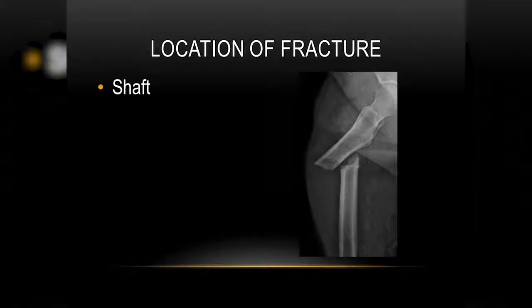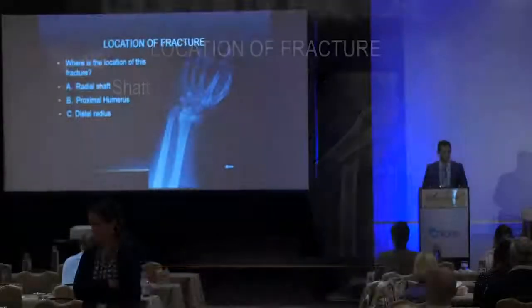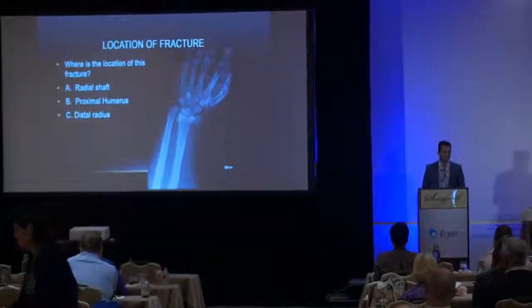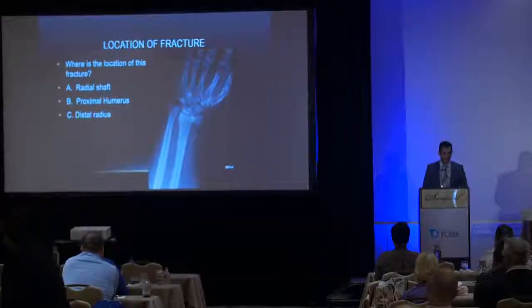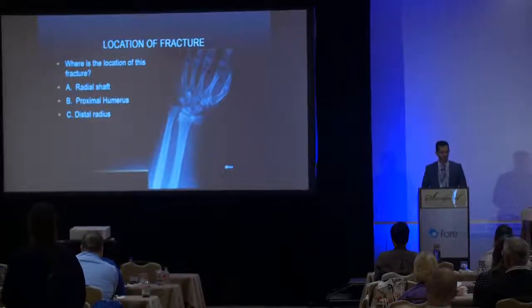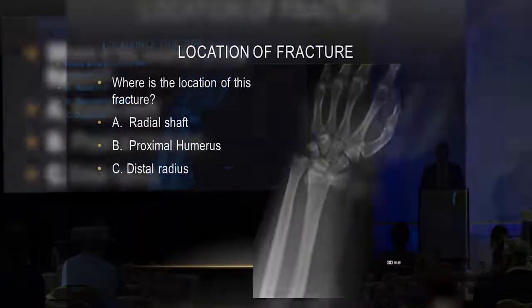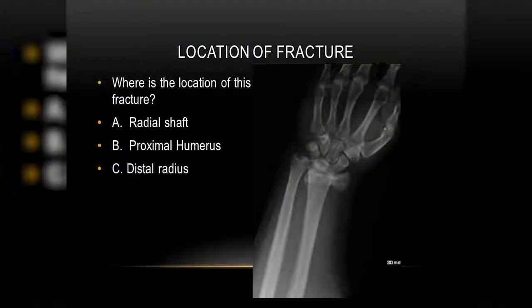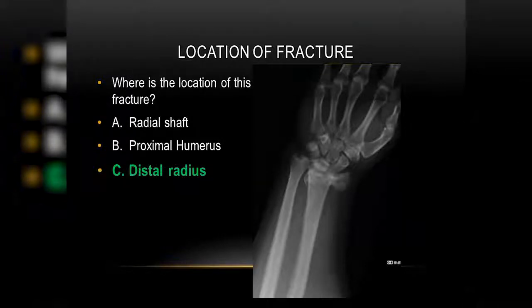And then there's this. What is this? Is this a radial shaft fracture? Is this a fracture of the proximal humerus, or is this a fracture of the distal radius? It's a location, right? So yes — distal radius. It's that simple.